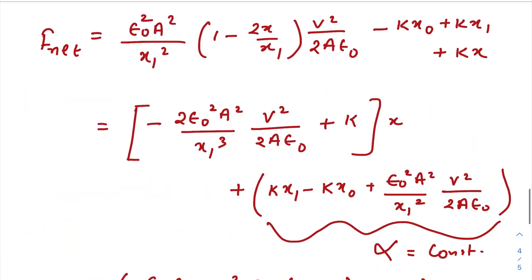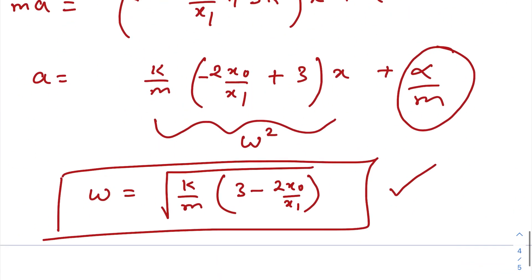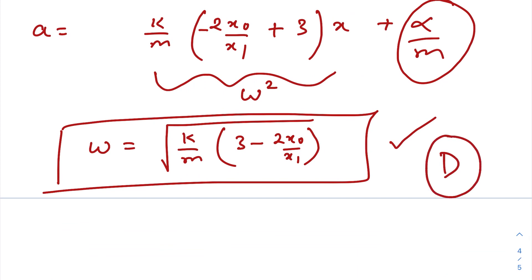So according to this one, which option is correct? Option D is correct. Root over k by m times 3 minus 2 x naught by x1. So I hope you all have loved this video.